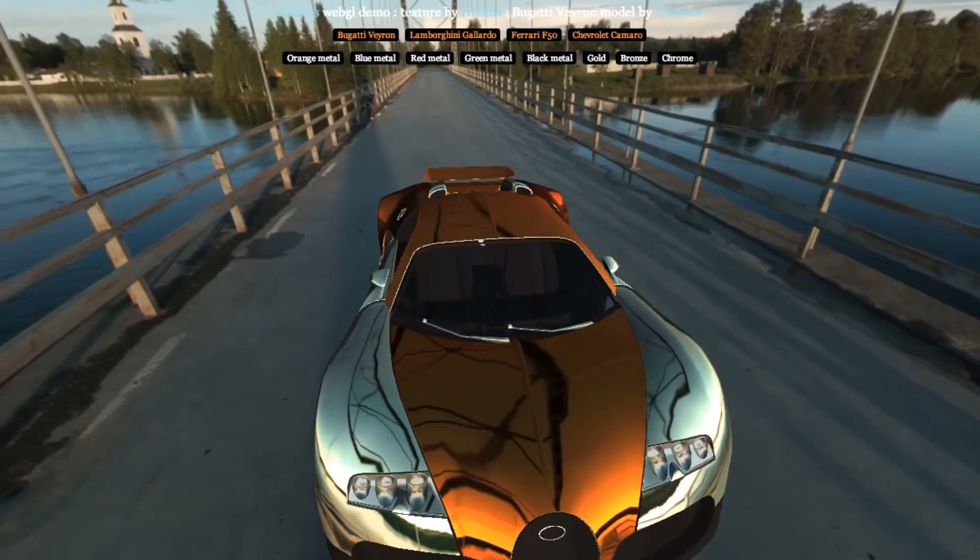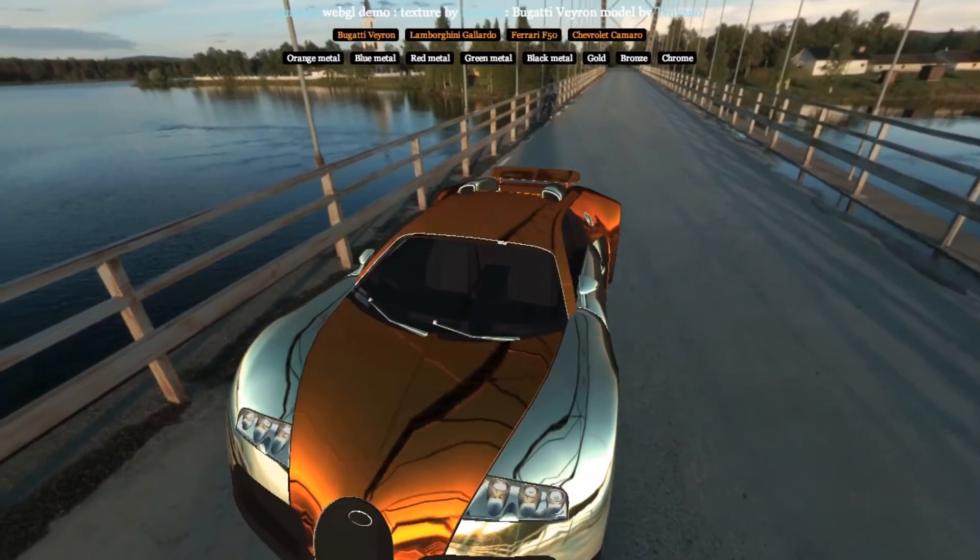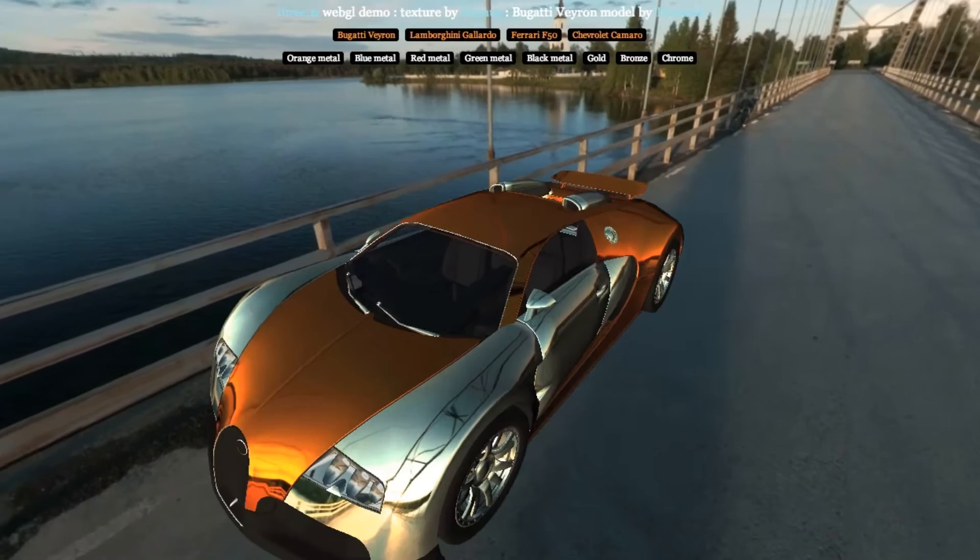We've seen how a skybox can be made to surround a scene. An extremely clever technique is to have surfaces reflect a skybox.